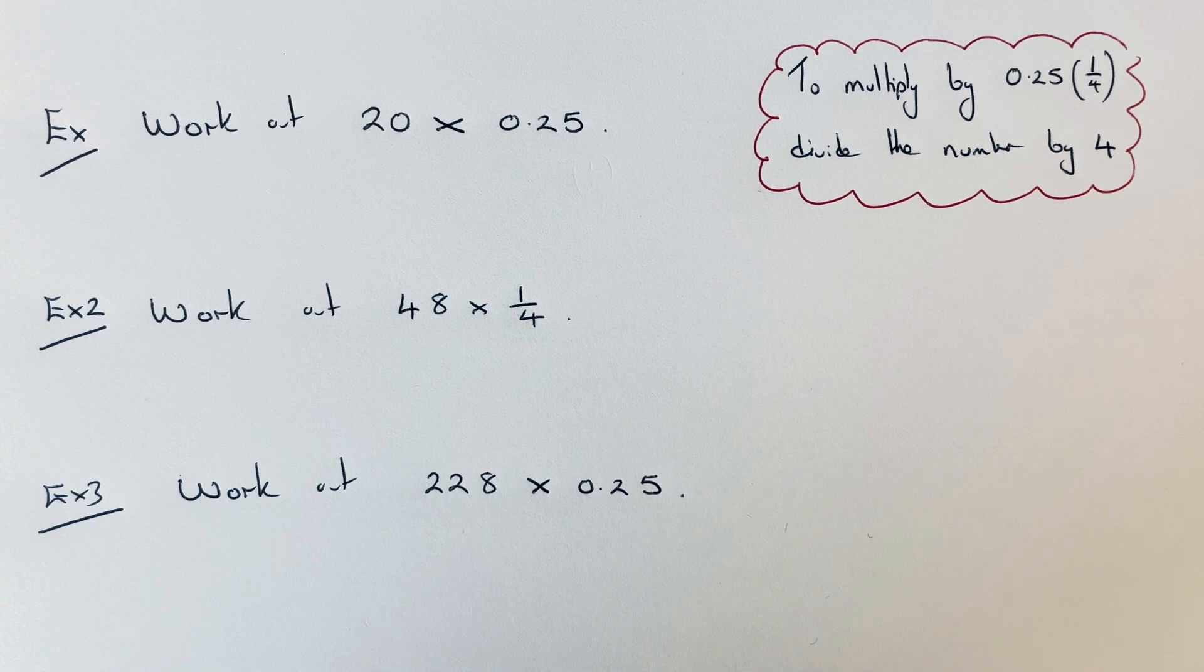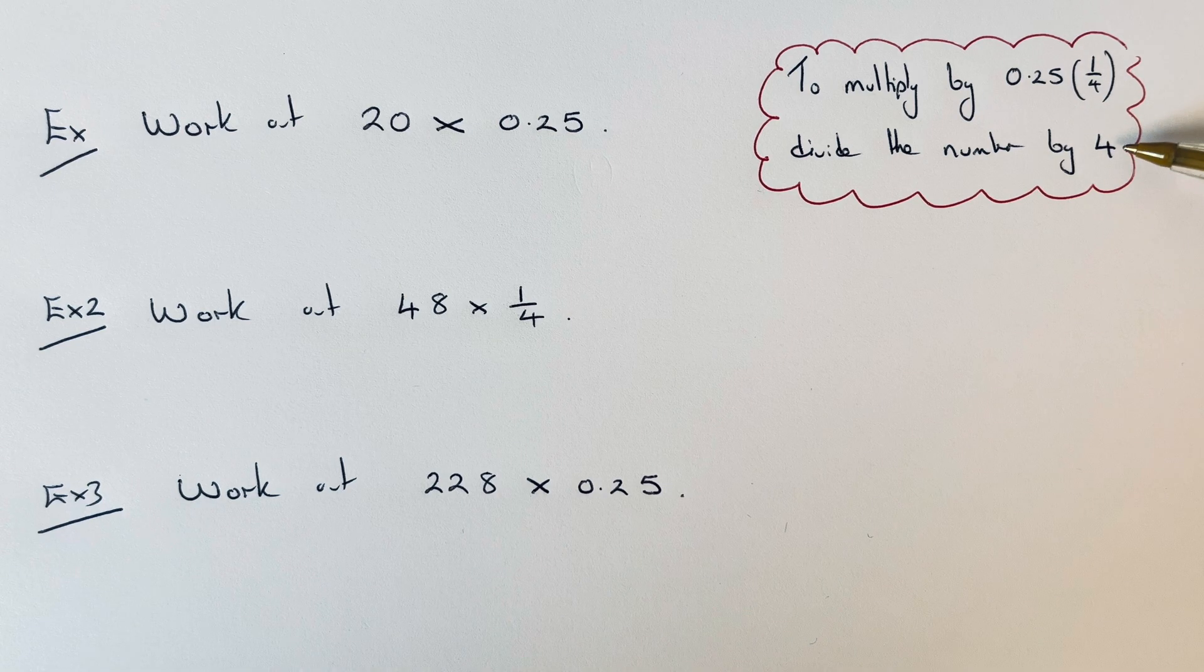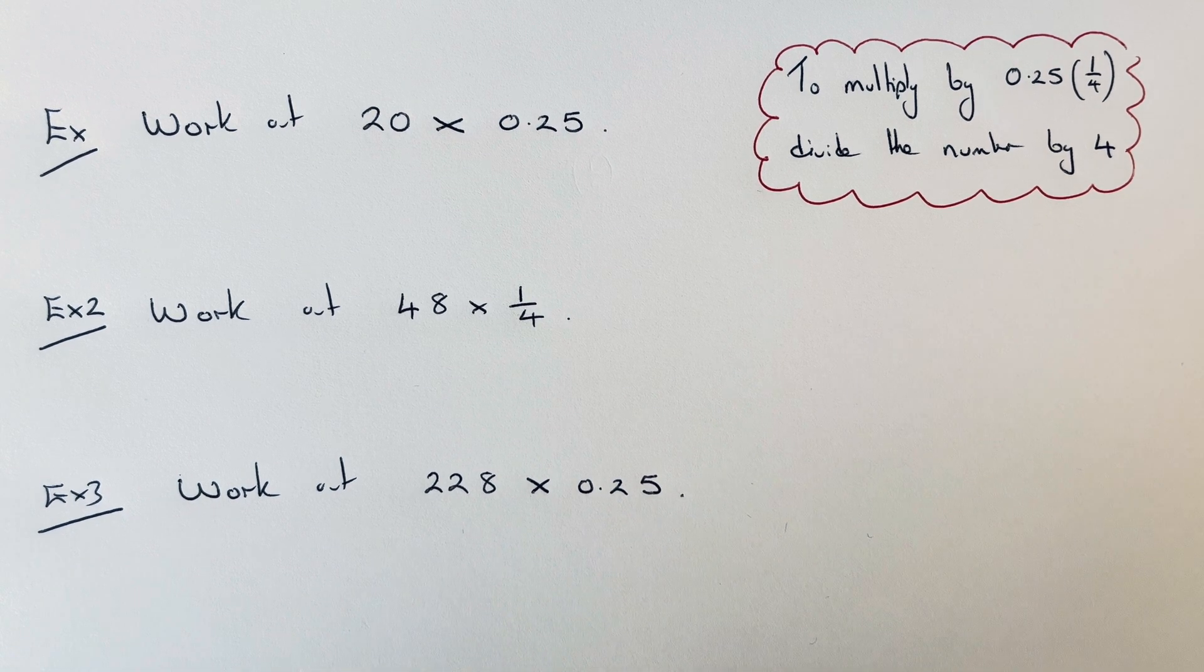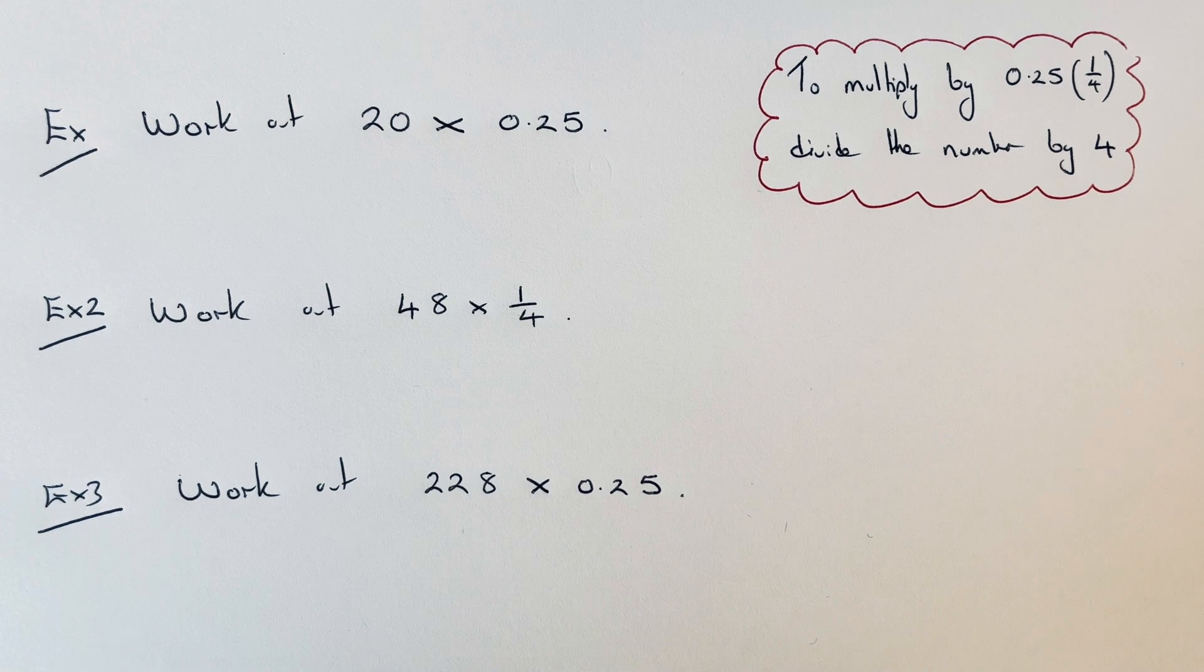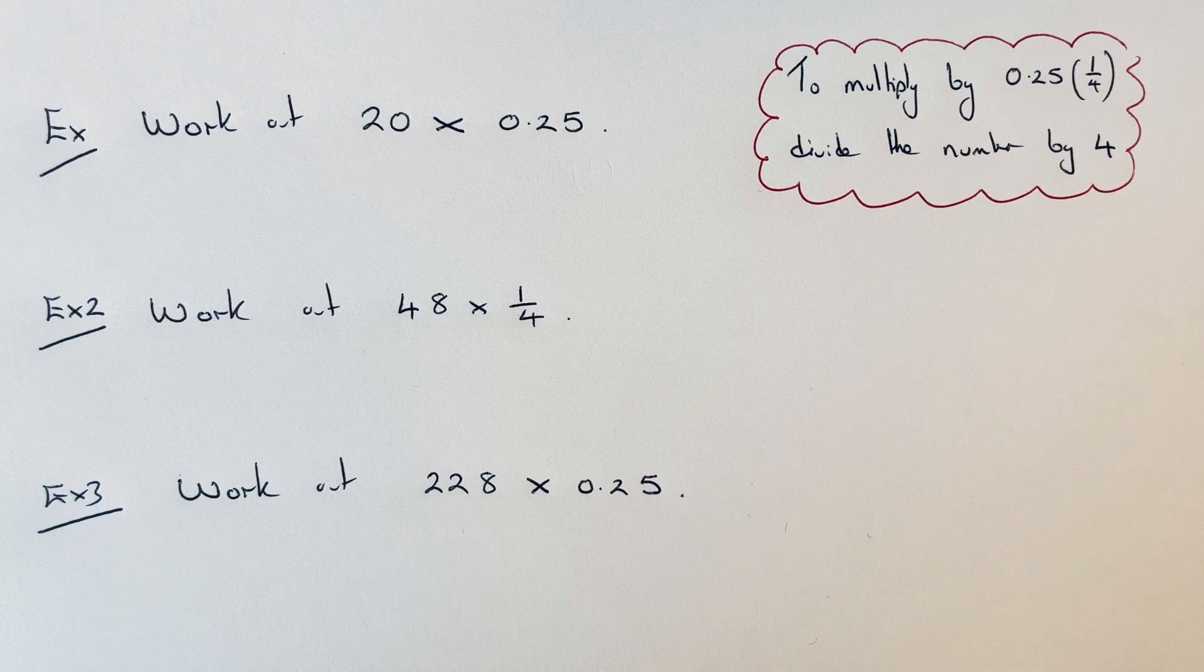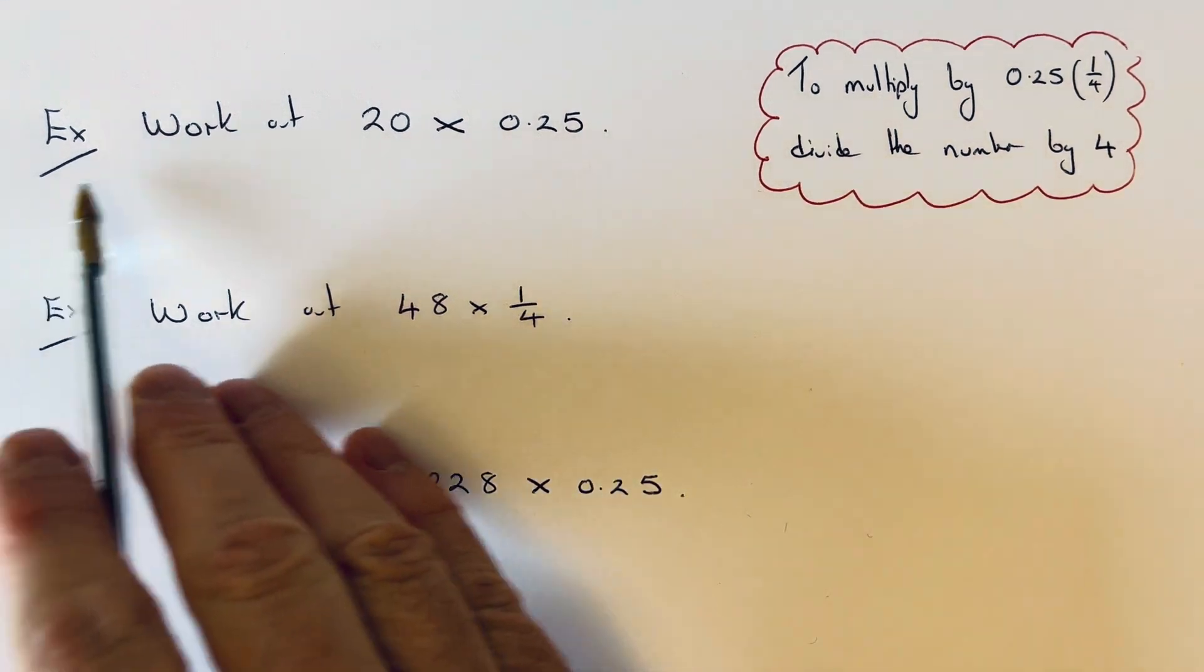And to do this, we just divide the number you're multiplying by 4. This is because 0.25 goes into a whole one 4 times. So let's have a look at the first example.